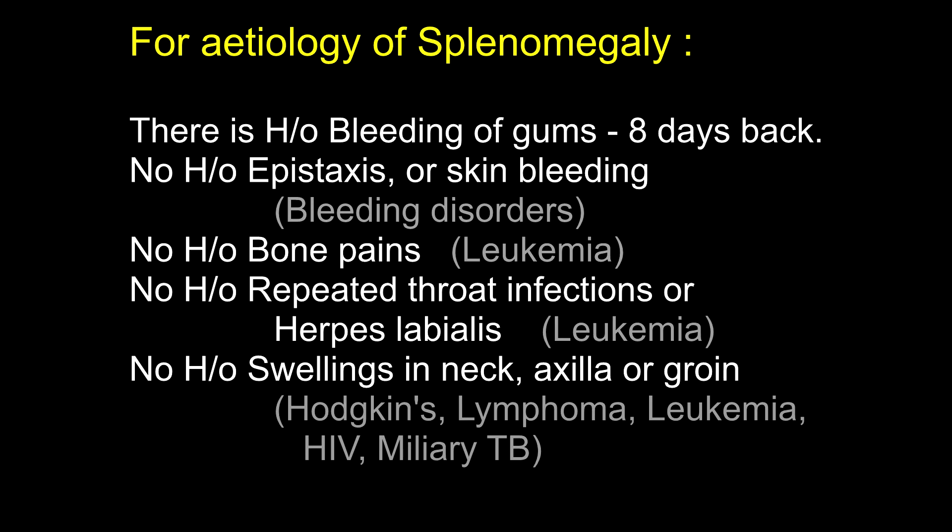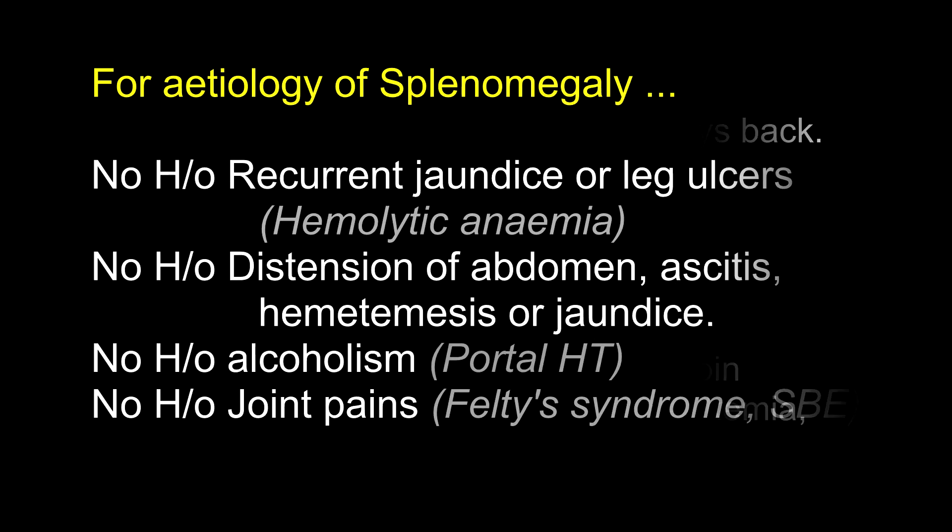There is no history of swellings in the neck, axilla or groin. No history of recurrent jaundice or leg ulcers. No history of distension of abdomen, ascites, hematemesis or jaundice. No history of joint pains. Where do you get joint pains with splenomegaly? Felty syndrome in rheumatoid arthritis, sub-acute bacterial endocarditis, hemophilias with hemarthrosis, and systemic lupus erythematosus.